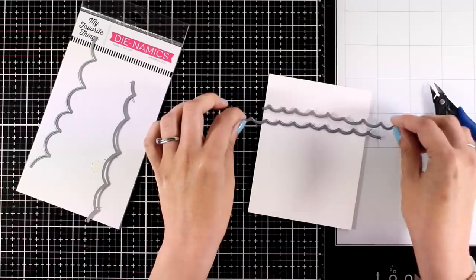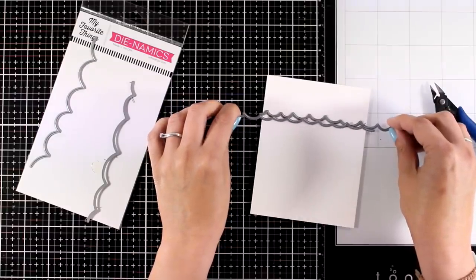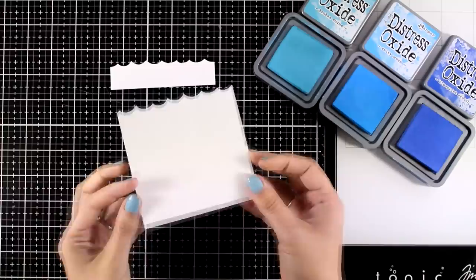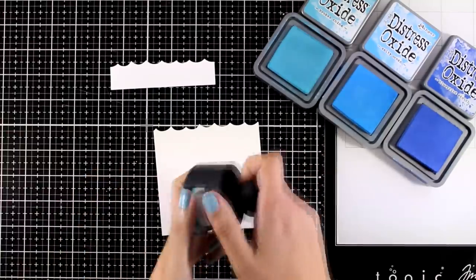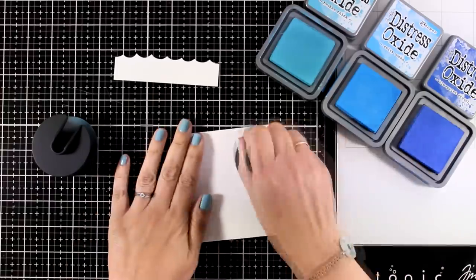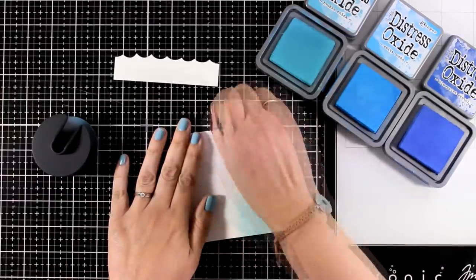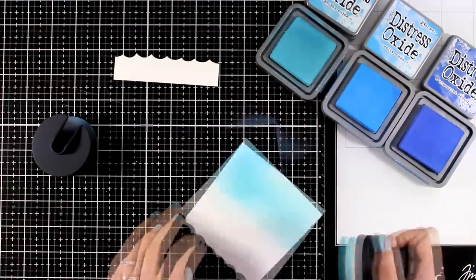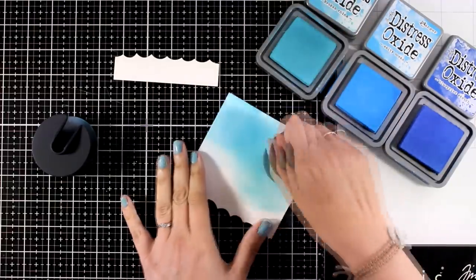Now I will use these border dies, these are perfect for creating waves. I will use these two to create a couple of panels that I can stack one on top of the other. Now that I have the panels ready I will do some blending. For that I'm using distress oxide inks and I'm starting with Broken China, which is the lightest blue.